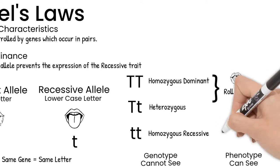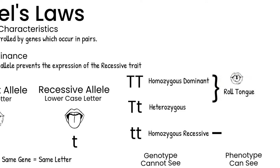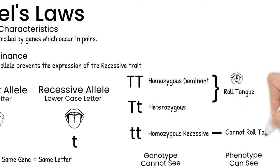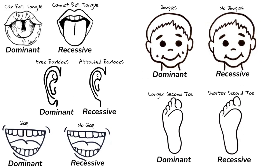The homozygous recessive genotype, however, would have the phenotype of not rolling their tongue, as they don't have the rolling tongue allele. So looking at our list from the start of this video, any recessive trait you show means you have the genotype of two recessive alleles.